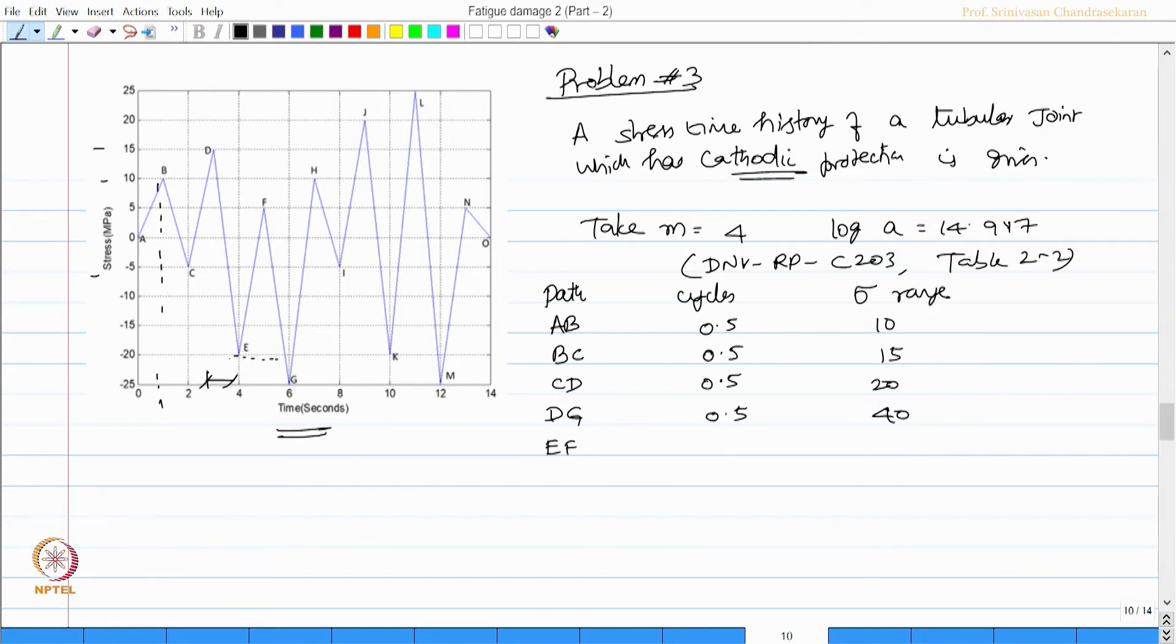E-F has got a reverse cycle, so 1.0, that is 0.5 into 2, and E-F is 5 and minus 20, so 25. G-L: again G drops at H, goes at J, drops at L. I get the full path G-L which is 0.5 because G and H are at 0.5, but the value is minus 25 to plus 25, which is going to be 50.